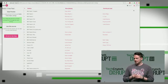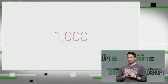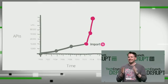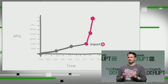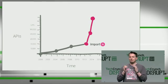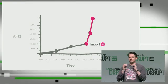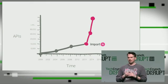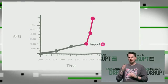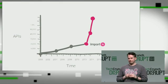To launch, we are releasing 1,000 APIs. In the past 13 years, there have only been 10,000 publicly available APIs created. In the next three months, Import.io will double that number.